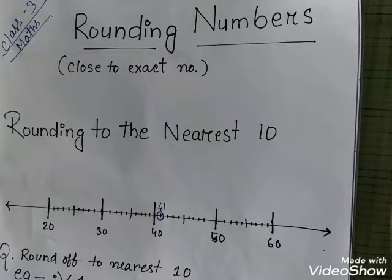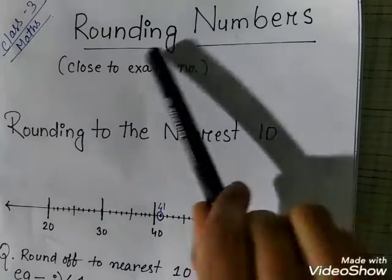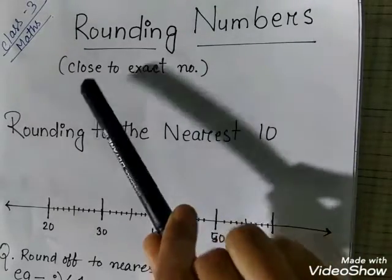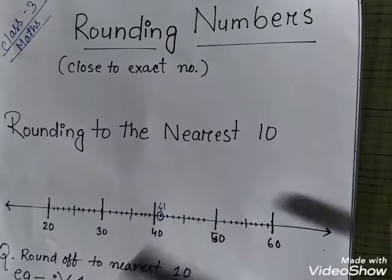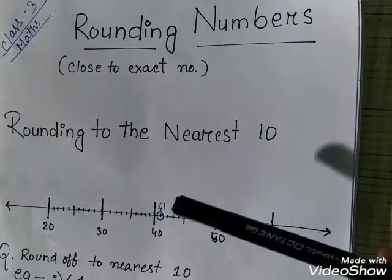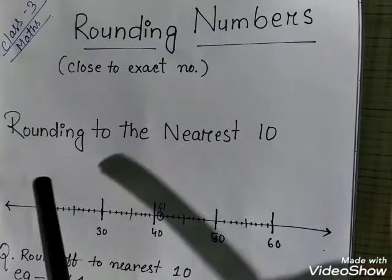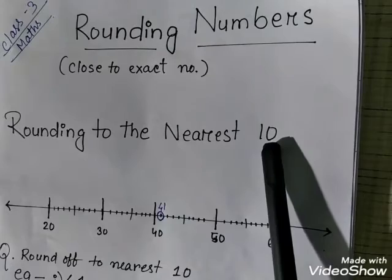Hello students. In this video I am going to discuss rounding numbers and odd and even numbers. Rounding a number means finding the closest exact number. If a number is given, we have to round it off to the nearest number.